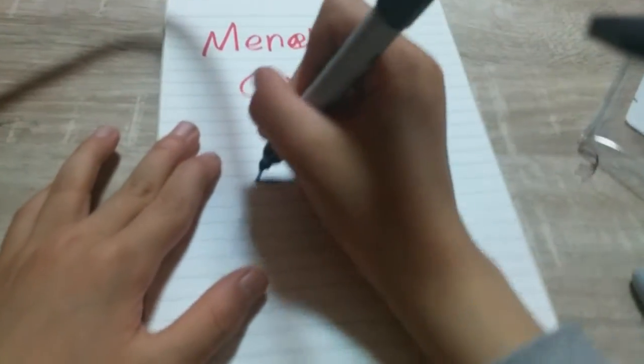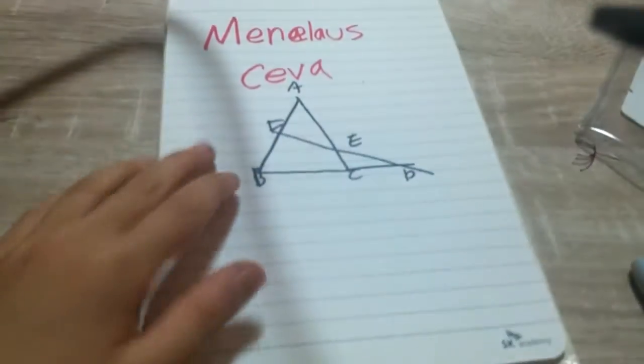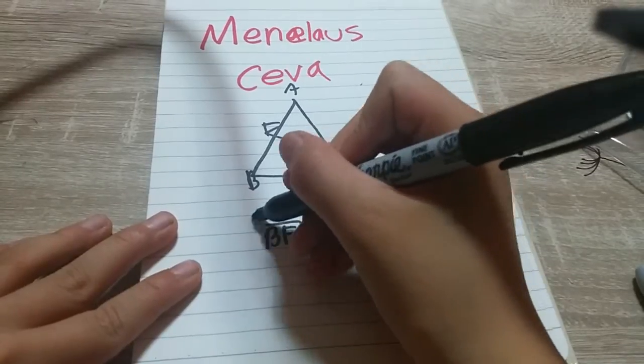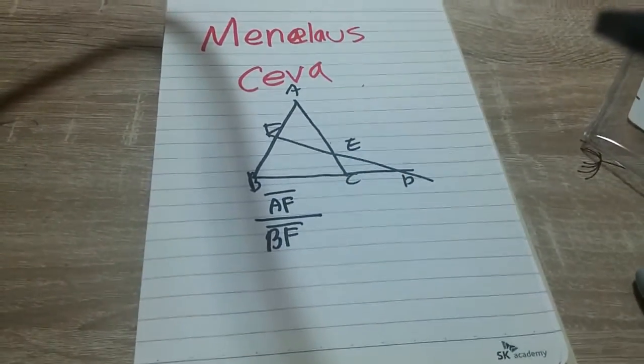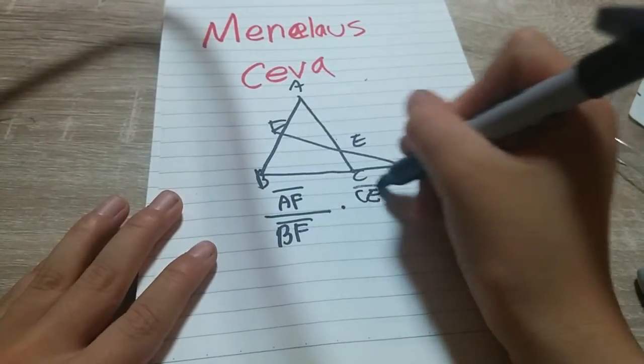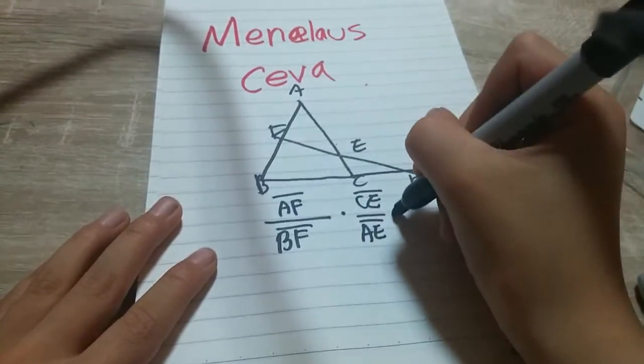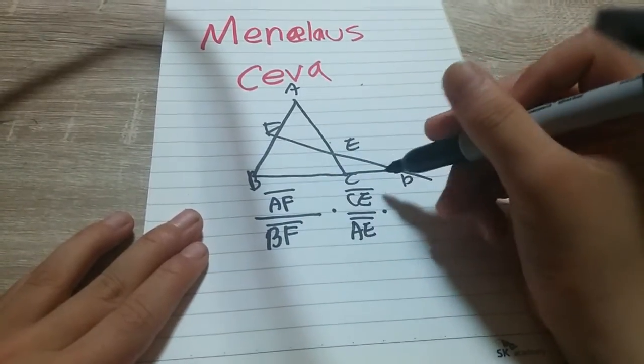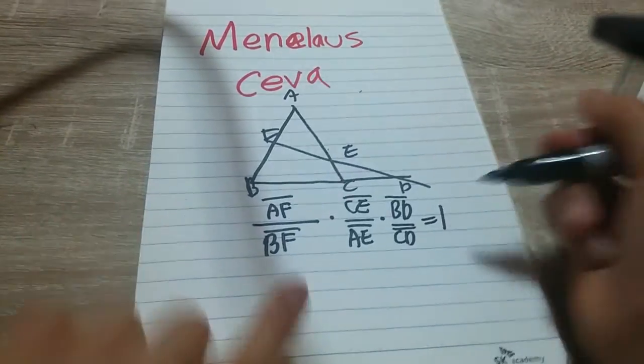Okay, so the Menelaus theorem is this. In this situation BF—I mean, this is the Korean pronunciation with American pronunciation. AF over BF multiplied by CE over AE multiplied by BD over CD, I think it should equal one.